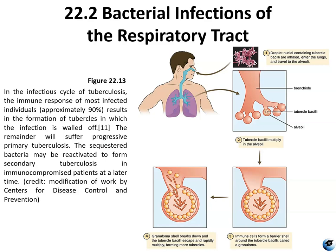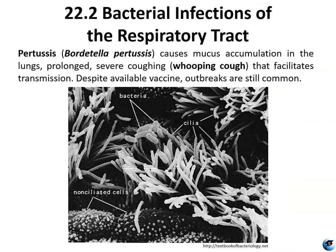Tuberculosis results in the formation of tubercles, and the infection is walled off by leukocytes and white blood cells. Sequestered bacteria may be reactivated to form secondary tuberculosis in immunocompromised patients. Pertussis is caused by Bordetella pertussis, the causative agent of whooping cough. It causes accumulation of mucus in the lungs and a very severe barking cough that facilitates transmission of the bacteria within the respiratory tract and from one person to another.